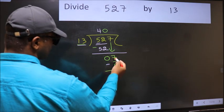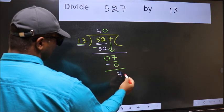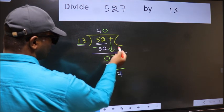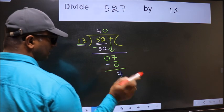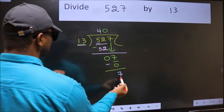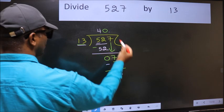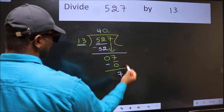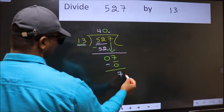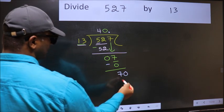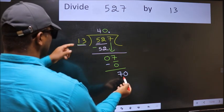Now we should subtract: 7 minus 0, 7. Over here we did not bring any number down, and 7 is smaller than 13. So now we can put dot and take 0, so 70. A number close to 70 in 13 table is 13 fives 65.